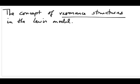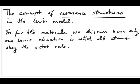Hi, everyone. In this video, we're going to discuss the concept of resonance structures in the Lewis model. So far, when we talk about Lewis structures, all the molecules we discuss have only one Lewis structure, in which all the atoms obey the octet rule. Now we're going to talk about molecules where there are more than one correct Lewis structures, and all of these structures obey the octet rule.